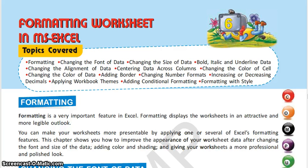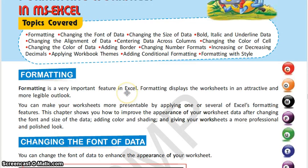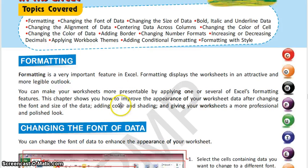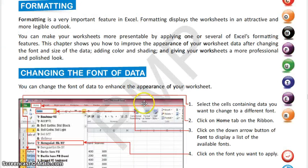In this chapter we are going to study about formatting. Formatting is a very important feature in Excel — it helps you make your worksheet more attractive and organize it according to your requirements. Formatting improves the appearance of your worksheet; for example, you can change the writing style, which is the font, the size of the writing style, and you can add colors to your tables in Excel.